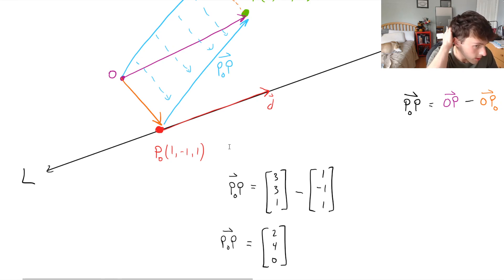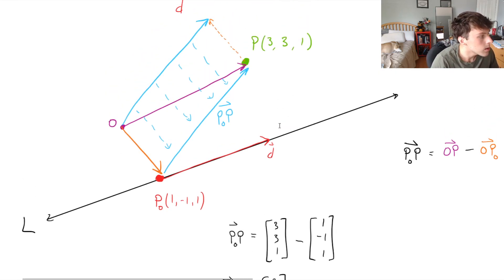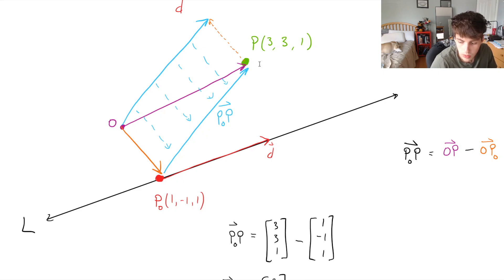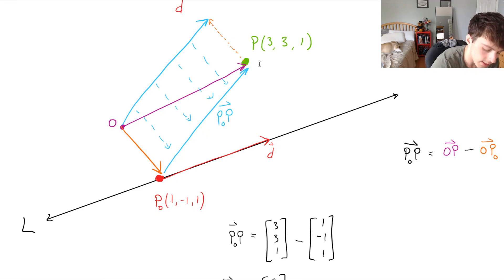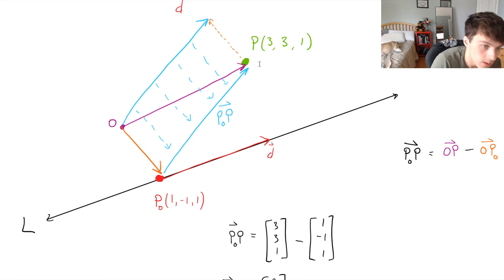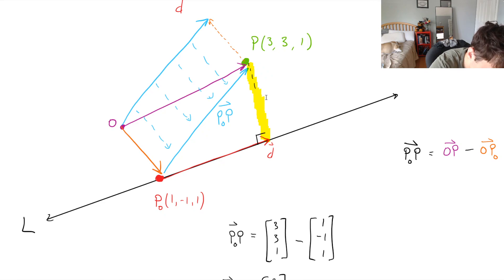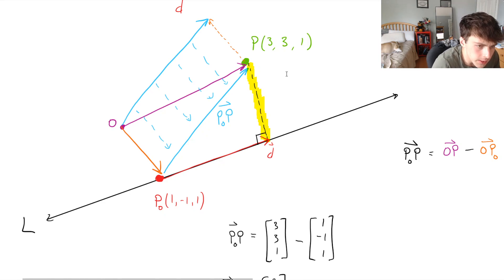We're looking for the shortest distance, and the shortest distance is going to be the perpendicular distance from point P to the line — it needs to be perpendicular, which results in the shortest distance. A perpendicular line would look something like this, making a right angle with the line. This is just the perpendicular component of the vector P0P projected onto the line with direction vector D.